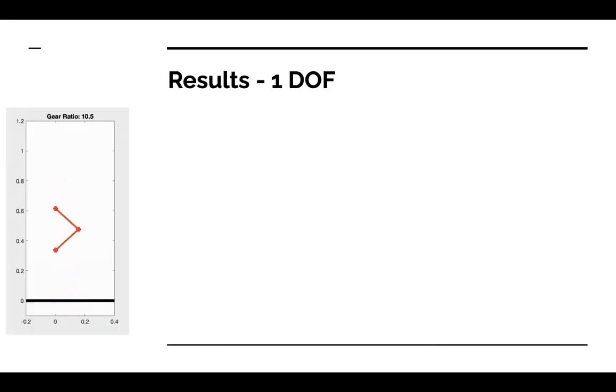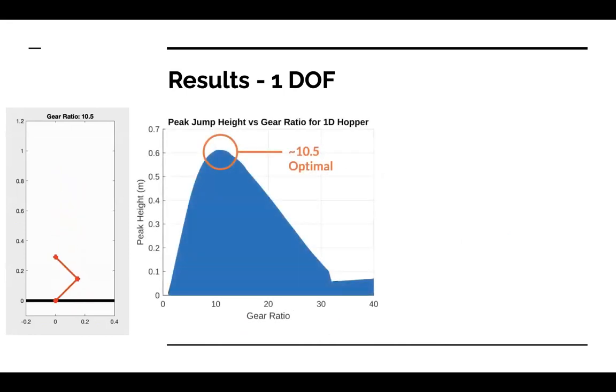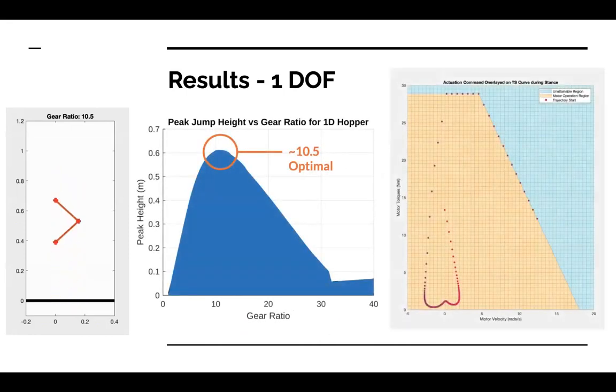Here is an animation of our optimal solution in the one degree of freedom case. We looked at gear ratios in the range of 0 to 40. This torque speed curve shows that the optimizer found bang-bang control, which is what we expected.